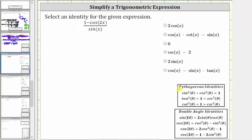Select an identity from the list on the right for the given expression. We are given the expression the quantity one minus cosine two x divided by sine x.